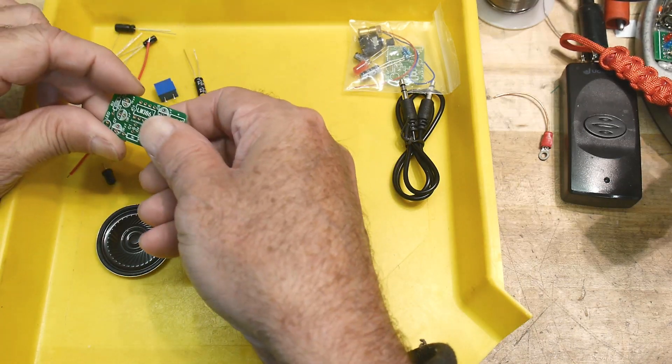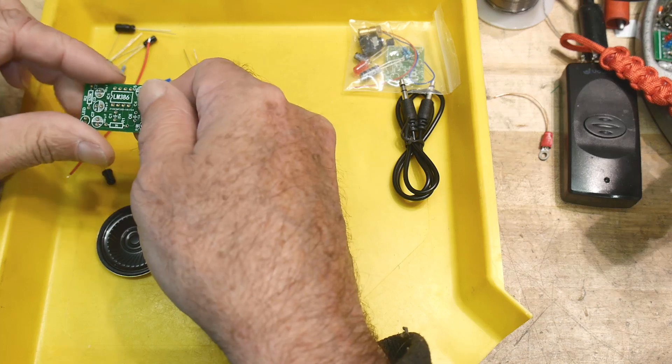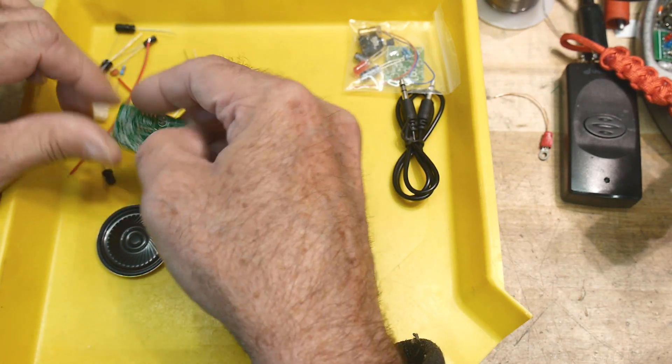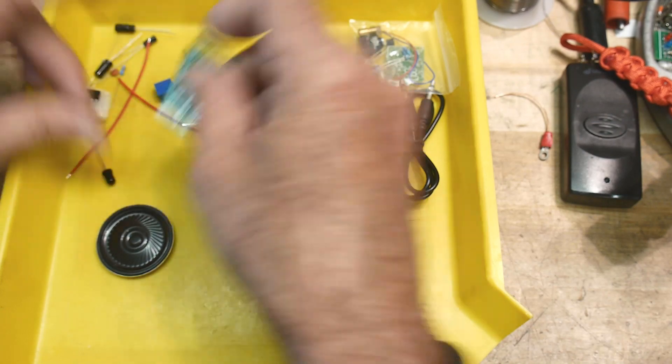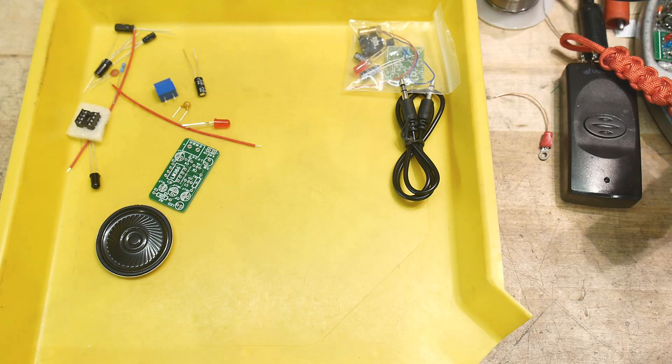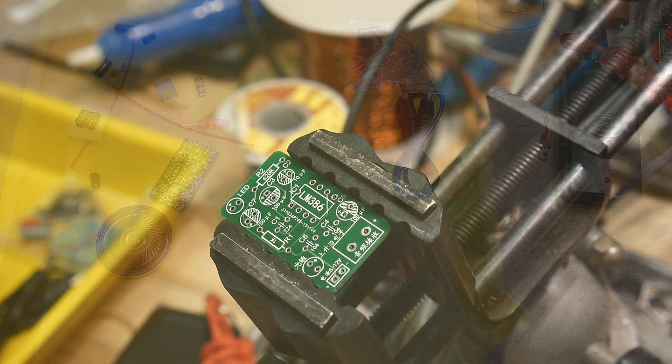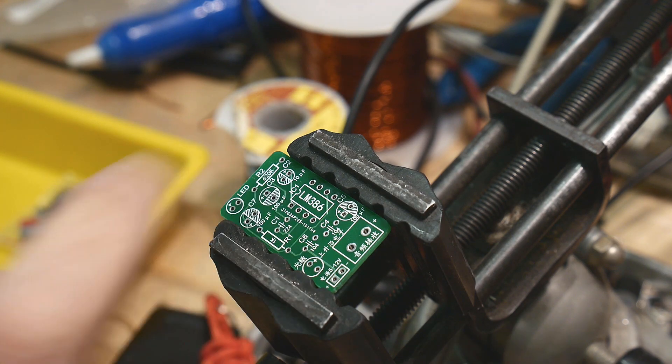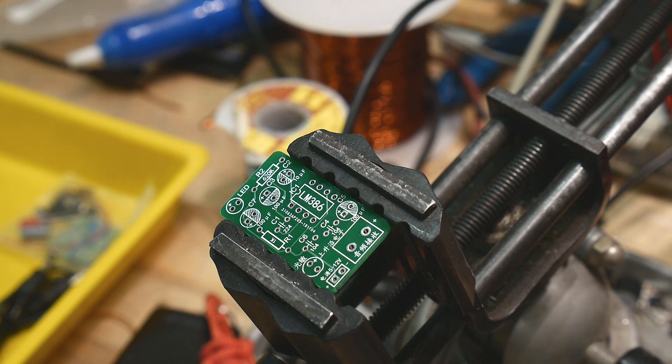A nice little board, two-sided FR4, very high quality. Everything is marked and there's some Chinese writing on it, of course. But that's okay. Let's hook it up, can't go too far wrong I don't think. Let's get out some resistors here.